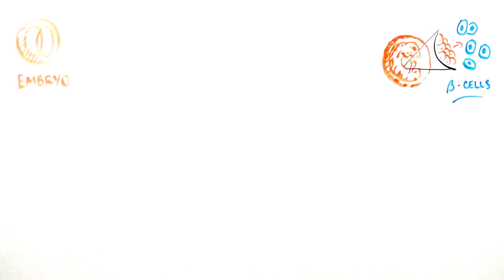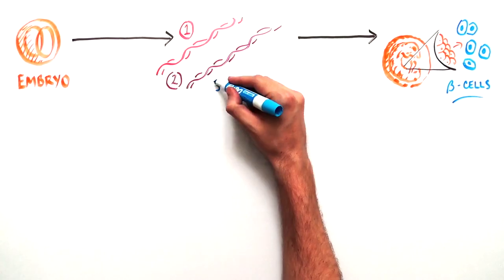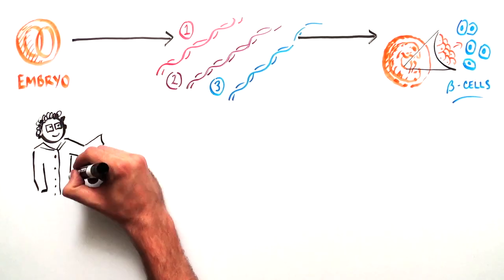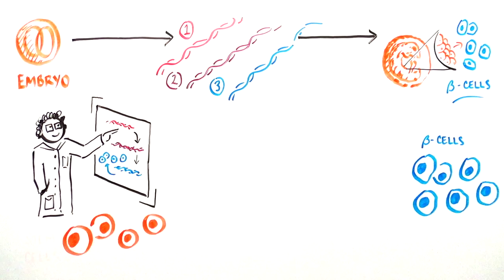The development of beta cells in the embryo involves the coordinated activation of a very specific set of genes in a very specific sequence. Scientists have been able to map out these genes and have been using this information to create their own beta cells from stem cells.